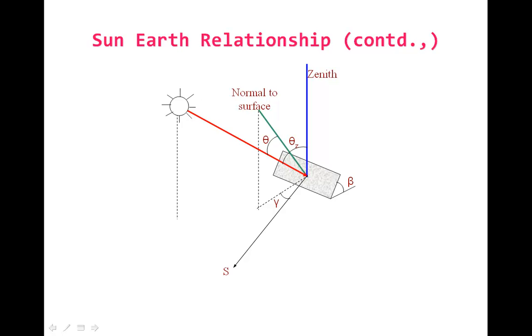Similarly, we can take the horizontal projection of sun beam or by shadow effect on the ground. Now, the angle between the horizontal projection of the sun beam to the south line is called as solar azimuth angle.